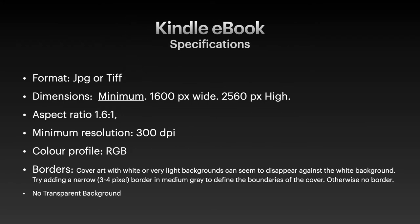Kindle eBook — this is the big one. Format: JPEG or TIFF. The dimensions are a minimum size of 1600 pixels wide and 2560 pixels high. Aspect ratio of 1.6 to 1. If you can maintain that even with a larger image, you'll be doing well. The minimum resolution is 300 DPI. Color profile is RGB. Now, with Kindles there's a little caveat.